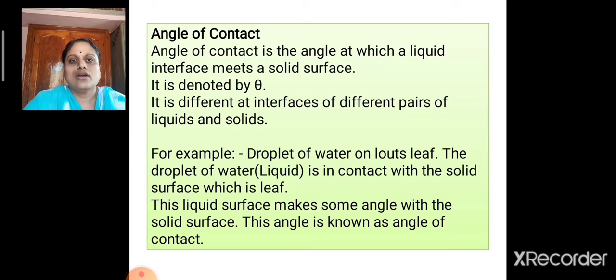For example, the droplet of water on a lotus leaf is in contact with the solid surface which is a leaf and the droplet is its liquid surface. This liquid surface makes some angle with the solid surface and this angle is known as the angle of contact.